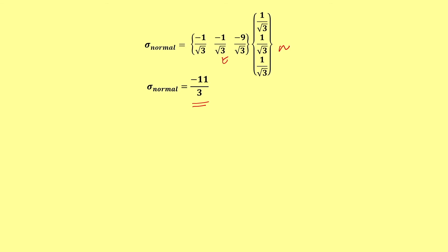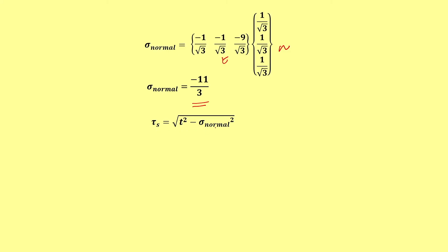What is left is the shear component. We know the traction vector and the magnitude of sigma_n. One can always find the magnitude of the shear component, which is given by tau_s = √(|t|² − σ_n²), where |t|² is the squared magnitude of the traction vector. Squaring the traction vector gives |t|² = 83/3, and σ_n² = 121/9, so tau_s = √(128/9). This gives us the normal stress and the shear stress components. We have determined the traction vector and, knowing it, obtained the stresses acting on the plane.